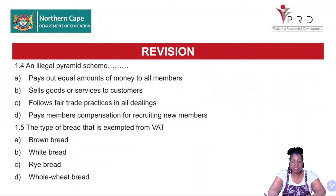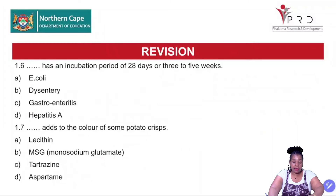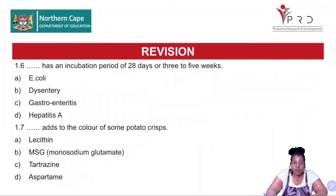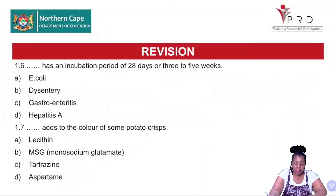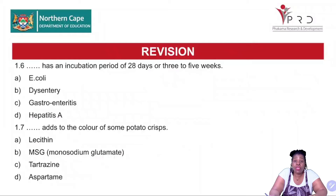Question 1.6: DASH has an incubation period of 28 days or 3 to 5 weeks — A, E. coli; B, dysentery; C, gastroenteritis; and D, hepatitis A. Question 1.7: DASH adds to the color of some potato treats — A, lecithin; B, MSG or monosodium glutamate; C, tetrazine; and D, aspartame. Answer 1.6 and 1.7.